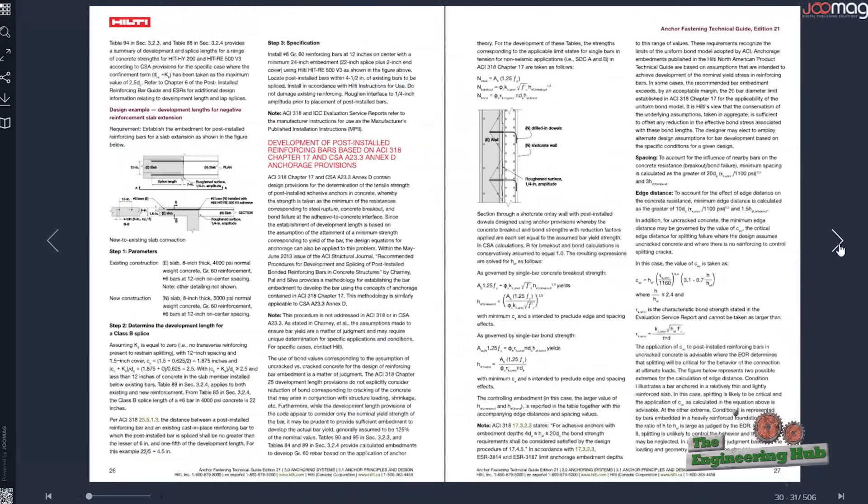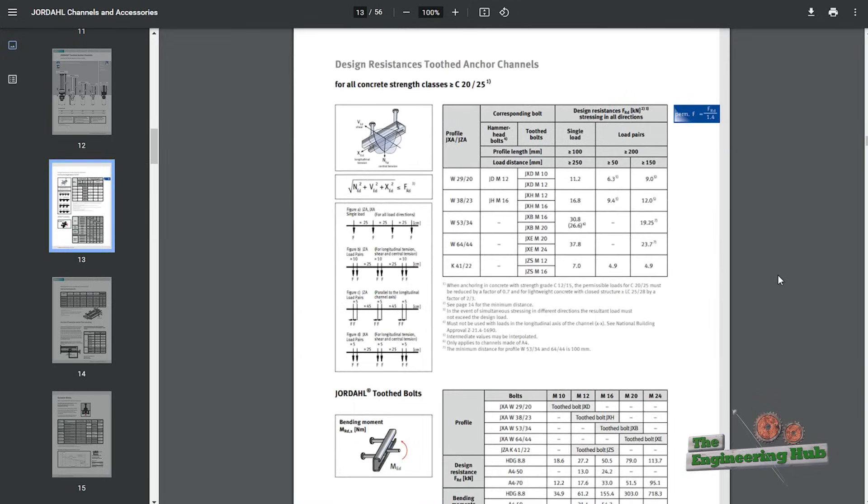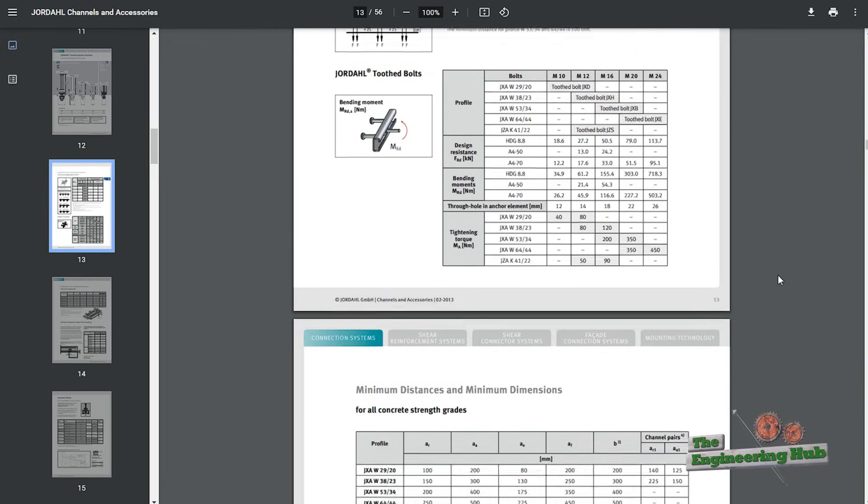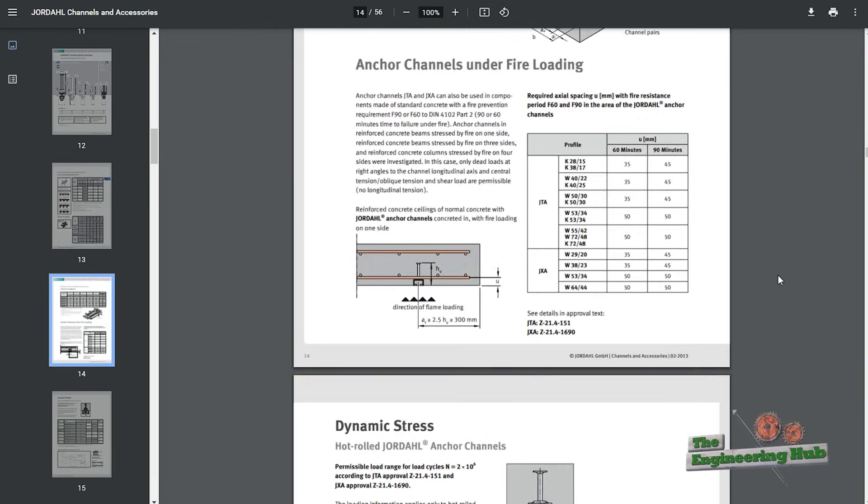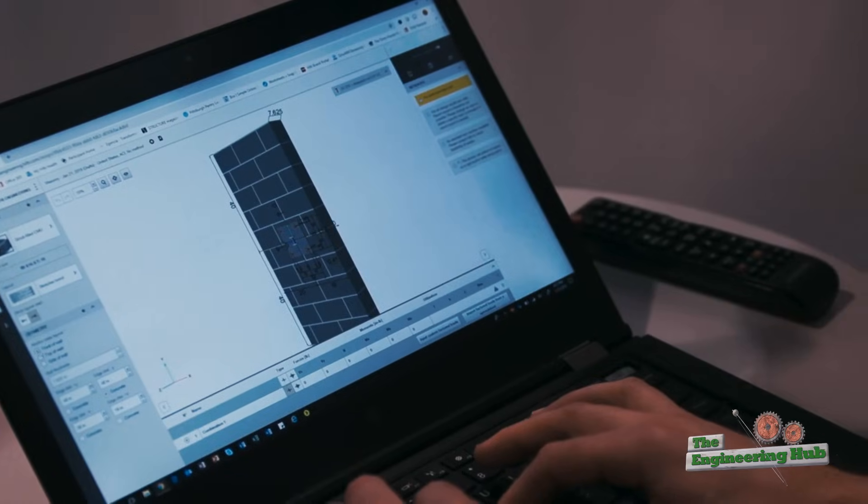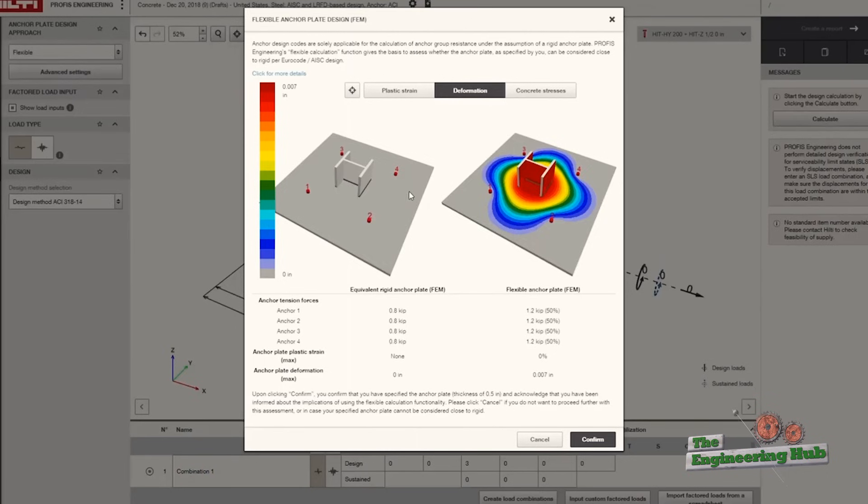If you know your design loads, product manufacturers will have data catalogs for you to compare your loads to and see what anchors work. More interestingly, certain manufacturers also have design software which allows you to iterate many possible configurations.